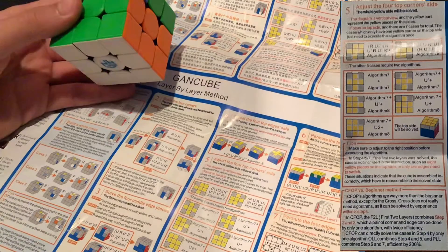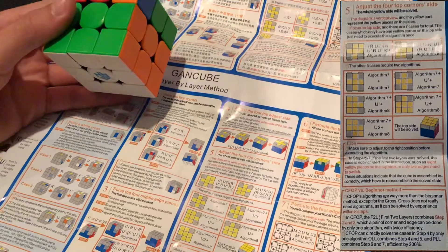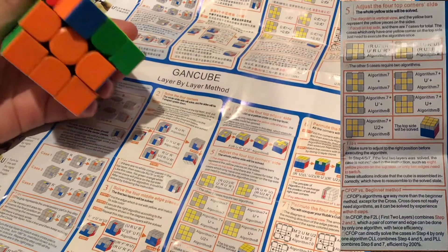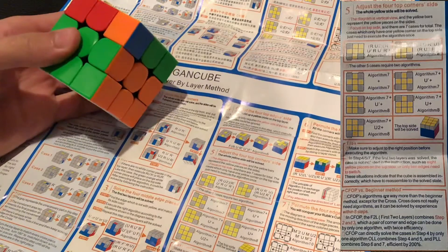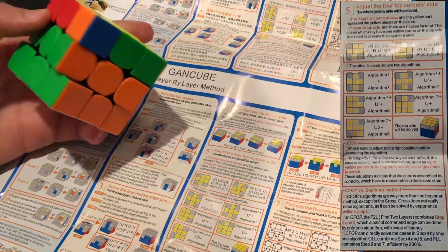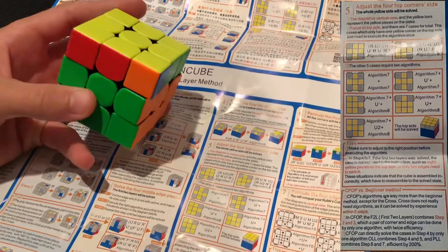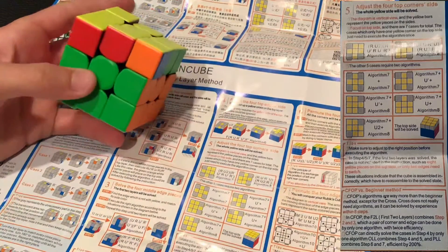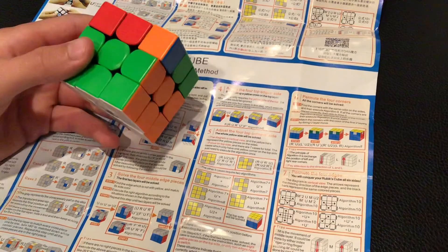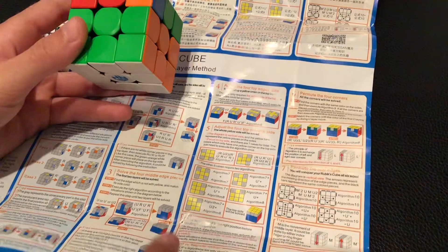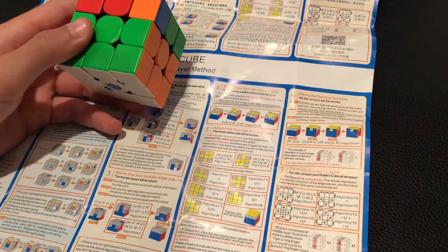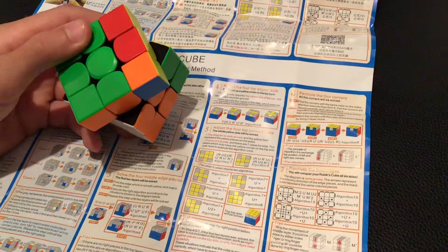I don't know if they're doing PLLs, but tips. Make sure to adjust the right position before executing the algorithm. In step four, five, and seven, the first two layers was solved. The case is not included in the instructions such as eight yellow pieces on the top side or only two edges need to switch. These situations indicate that the cube is assembled incorrectly, which have to reassemble to the solved state. So that basically means if your cube is, if you disassembled your cube and then you reassembled your cube, then it would probably be incorrect. And if you did it incorrectly, then that's what it's talking about.